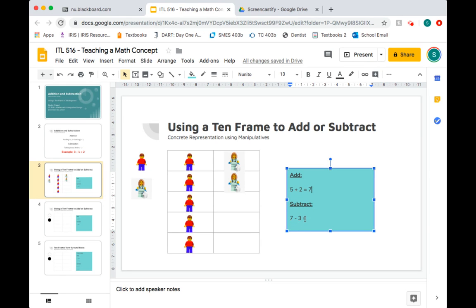Subtracting looks very similar. In this case, I have seven subtracting three, or three being taken away from seven. Since we already have seven Legos on our 10 frame—one, two, three, four, five, six, seven—we already have this first digit represented. So all we need to do now is take away three.